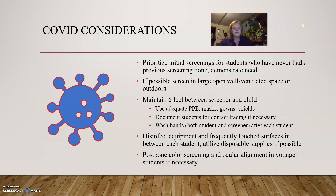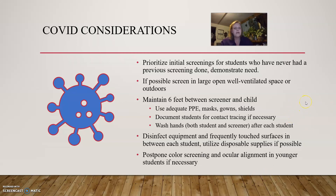Some considerations for COVID during screening: prioritize initial screenings for students who have never had one or who demonstrate need. Screen in a large, open, well-ventilated space or outdoors if possible. Maintain six feet between the screener and child, or if not possible, use appropriate PPE including a mask, face shield, gown, and gloves. Ensure the student has a properly fitting mask. Document students for contact tracing. The student and screener must wash hands before and after each student, disinfect equipment and frequently touched surfaces between students, and use disposable supplies if possible. Color screening and ocular alignment in younger students can be postponed if necessary depending on COVID numbers in your area.